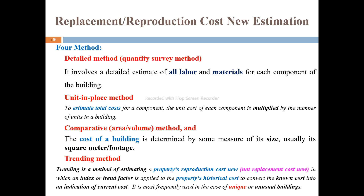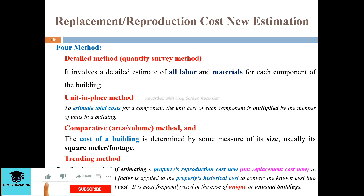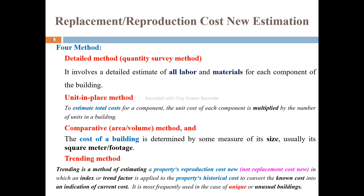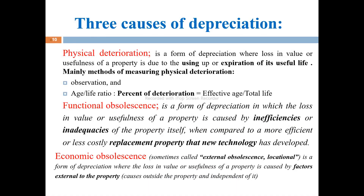The cost of building determined by the construction price index is most frequently used in the case of unique or unusual buildings where comparable market data is not available. That is why the trend or index method is used to determine the reproduction cost for such buildings.